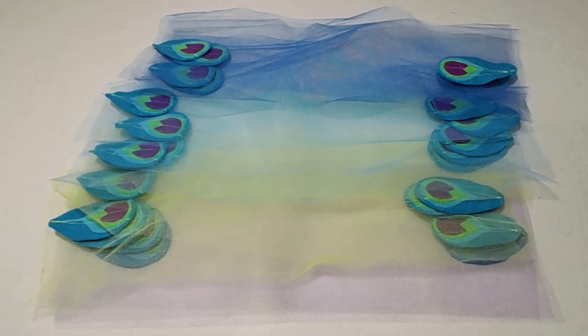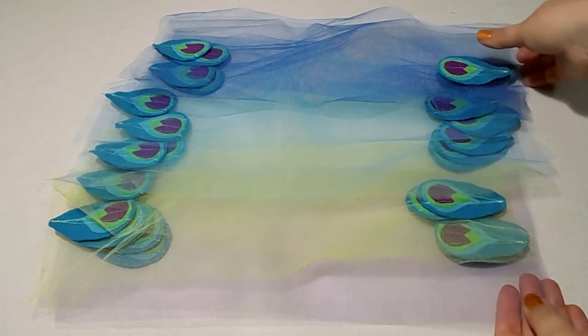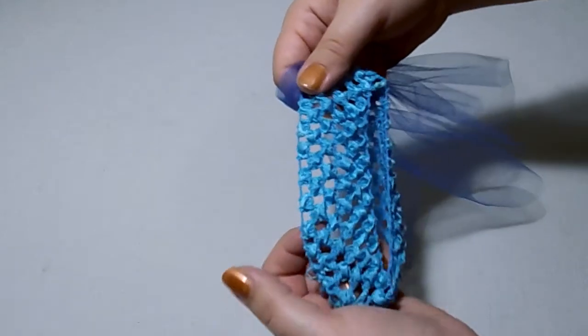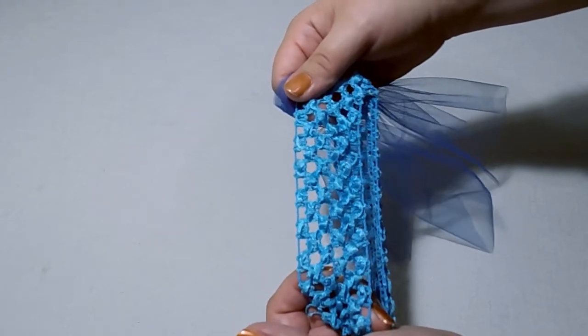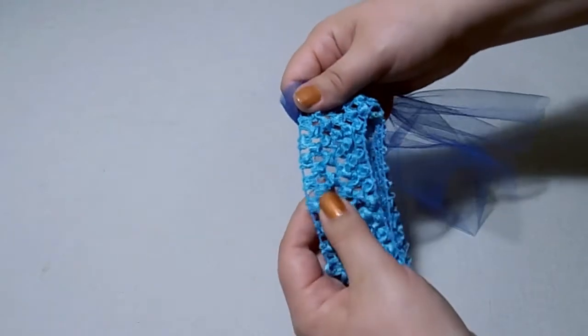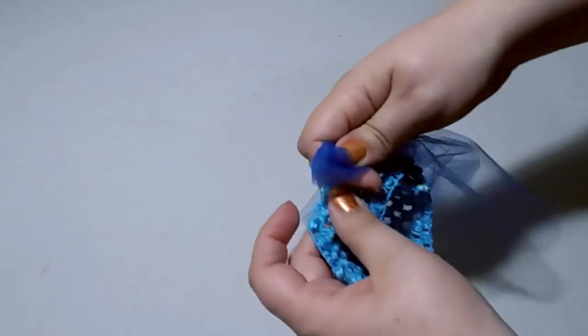Once you've stitched all your feathers onto the tulle pieces, you should have a pile that looks similar to this. I am now going to show you how to insert the tulle into the crochet headband version of the tutu. If you're doing the ribbon version it's slightly different, but the tie is very similar.